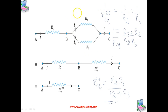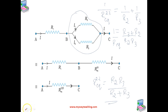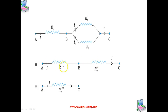We replace the parallel combination with this equivalent resistance, as shown in the second figure. Now R1 is in series with the equivalent resistance we calculated. This simplifies the circuit. In this second step, R1 and R_equivalent are connected in series on an end-to-end basis.